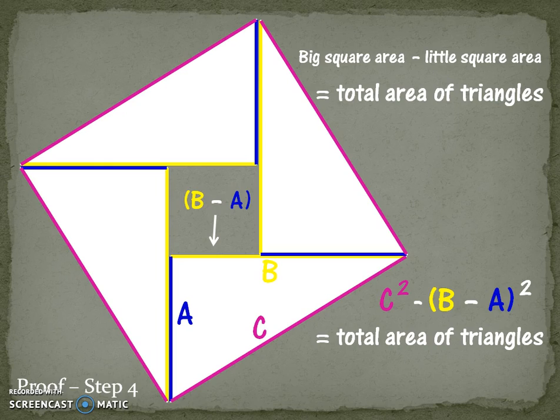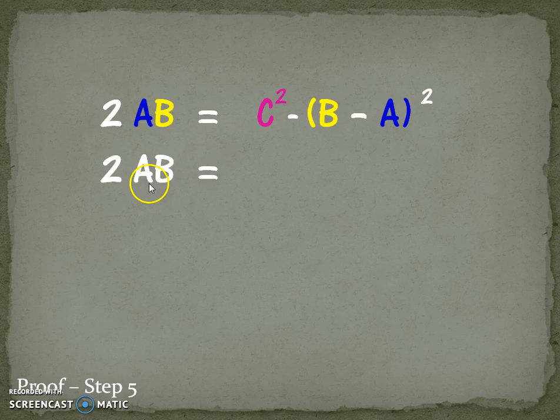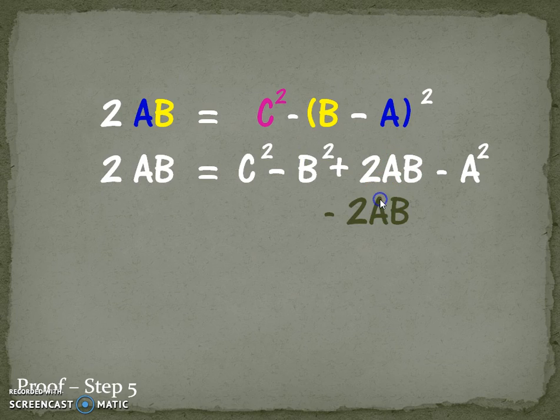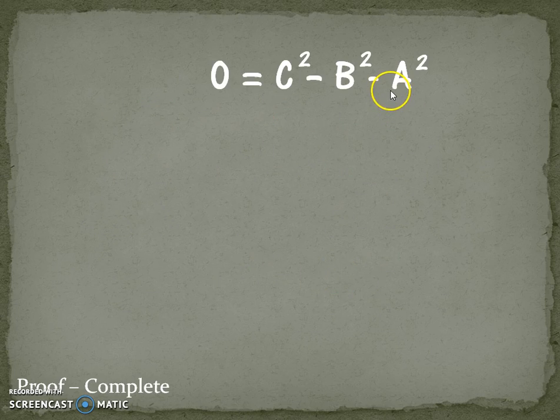If we take what we found in step 2 and in step 4 and make them equal to each other, we should be able to find the proof of the Pythagorean theorem. This is what we found in step 2. This is what we found in step 4. Now let's just solve it. On the left-hand side, 2AB. On the right-hand side, remember to distribute the exponent properly and also distribute the negative sign. Let's subtract 2AB from both sides. On the left-hand side, we get 0. On the right-hand side, because these two cancel out, we get C squared minus B squared equals A squared. Now, let's move over the A squared and the B squared because the purpose here is to leave C squared by itself.